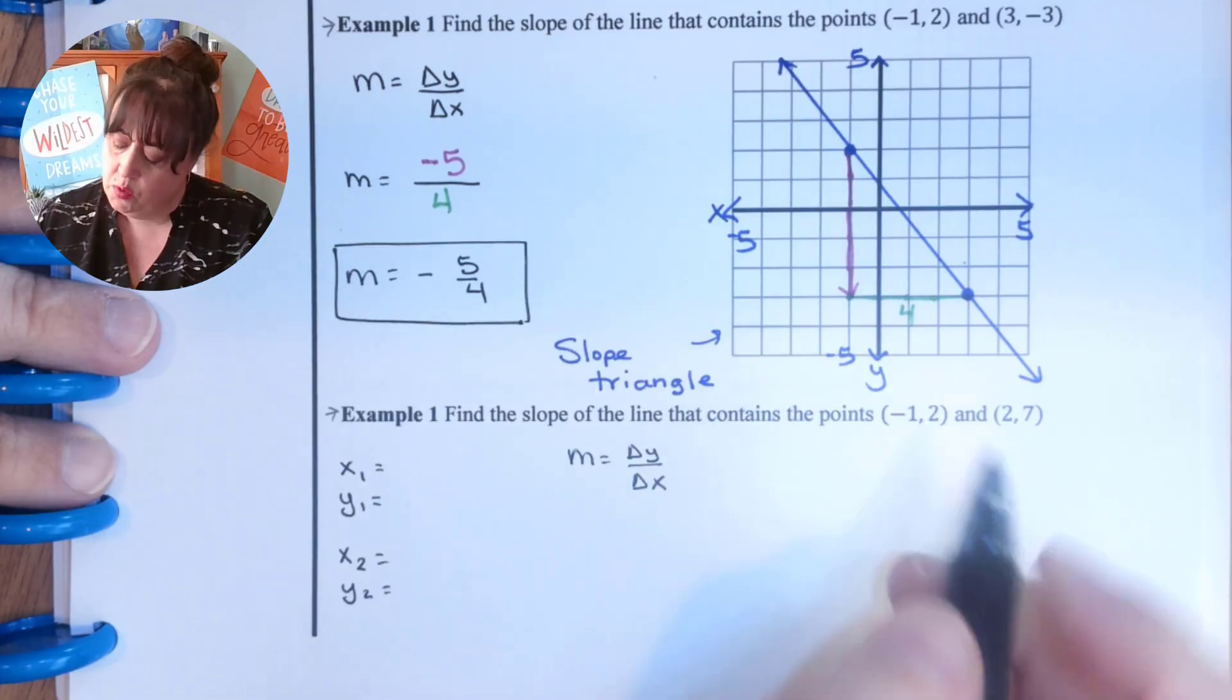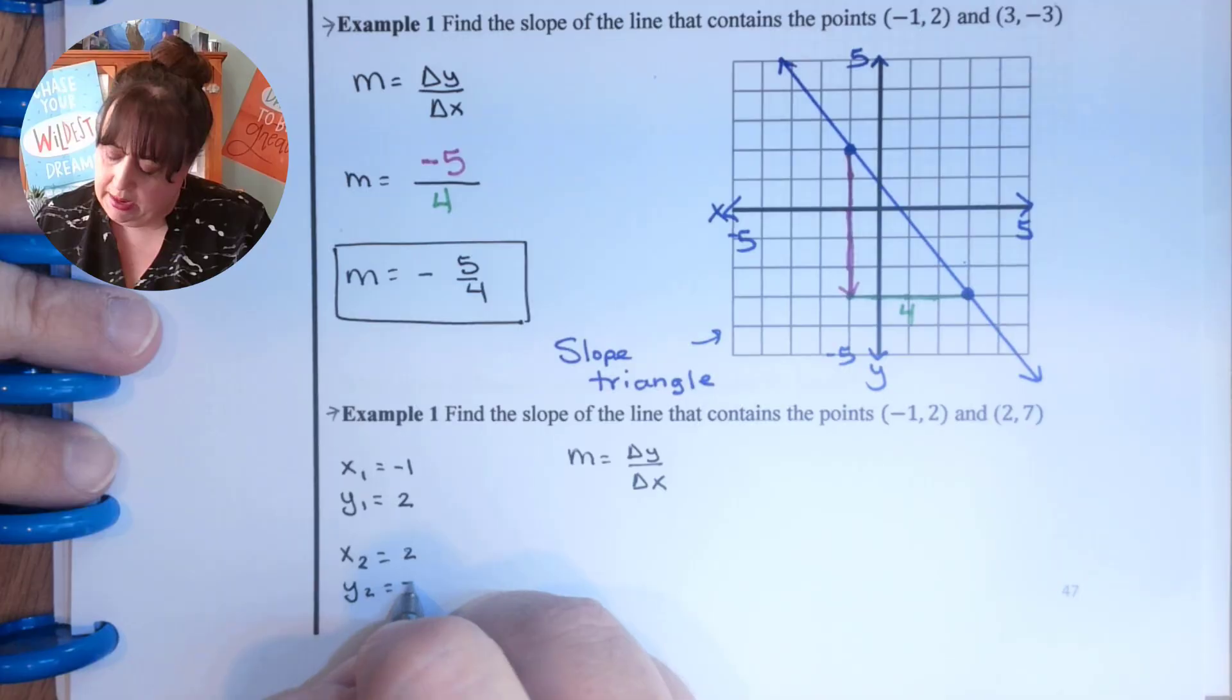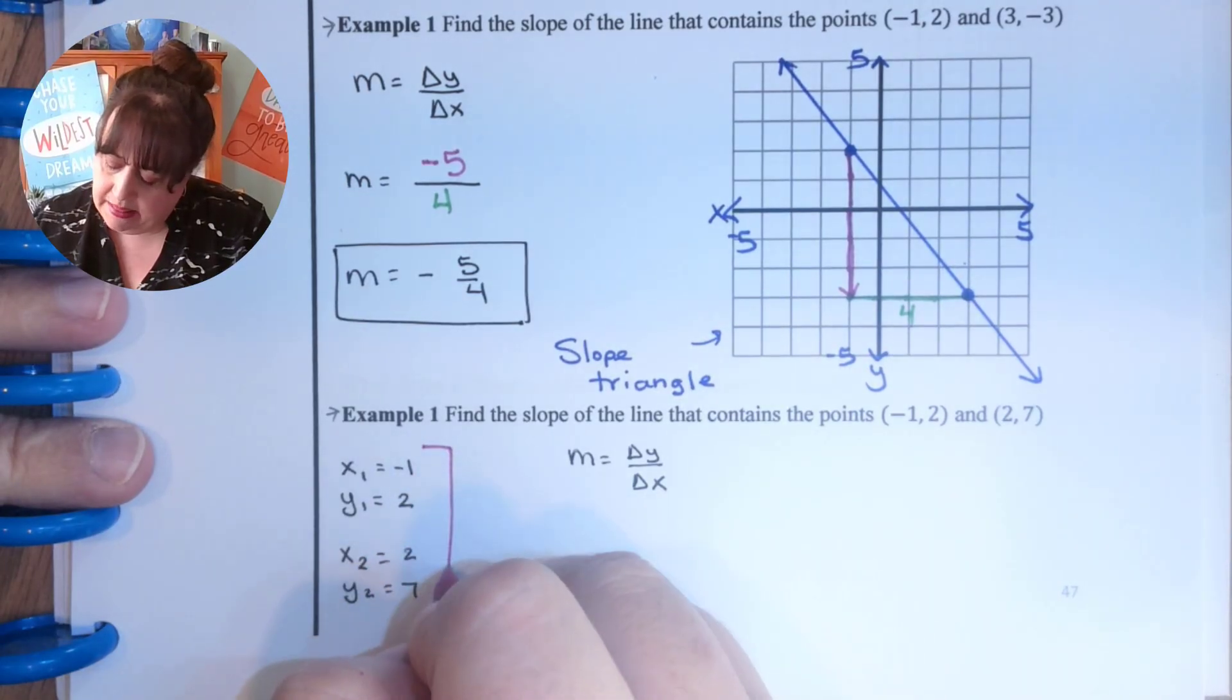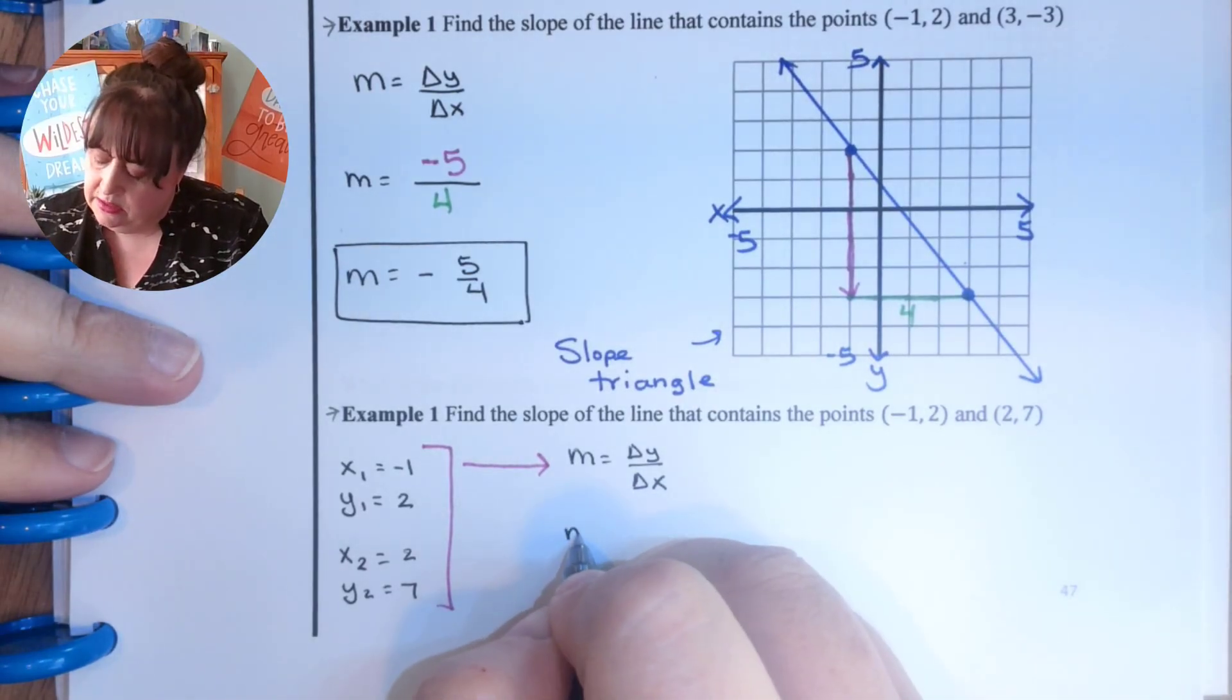So from the first coordinate, it was negative one and two. From the second coordinate was two and seven. And we're going to write things down that we're substituting into there. And this is how I do it to keep everything nice and straight.